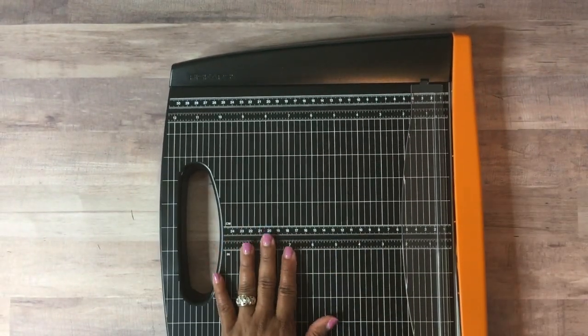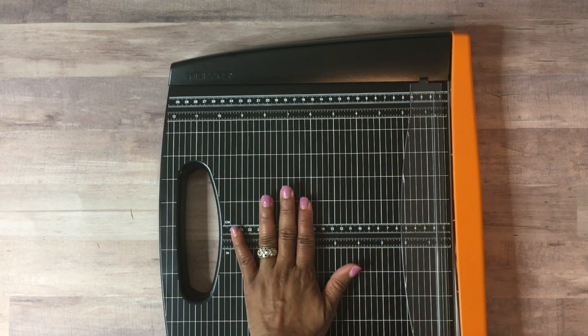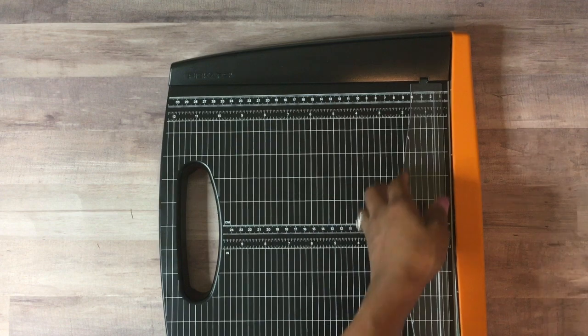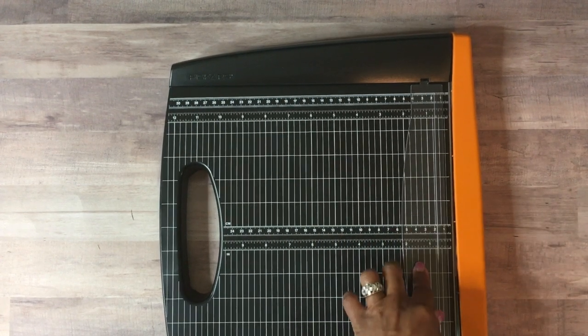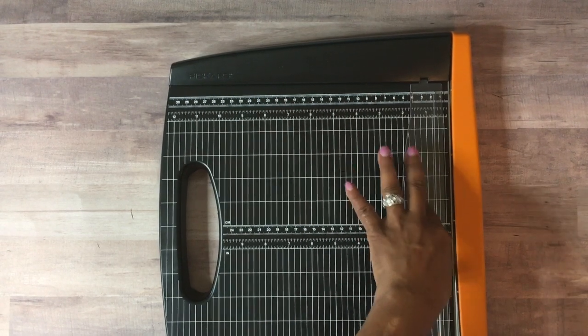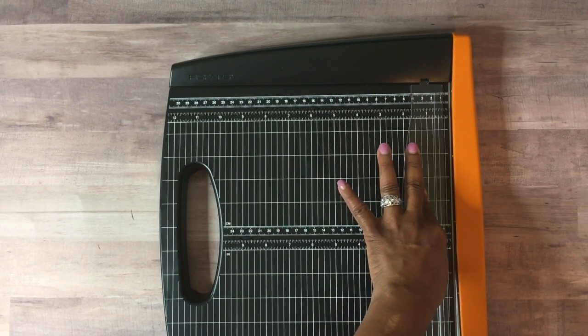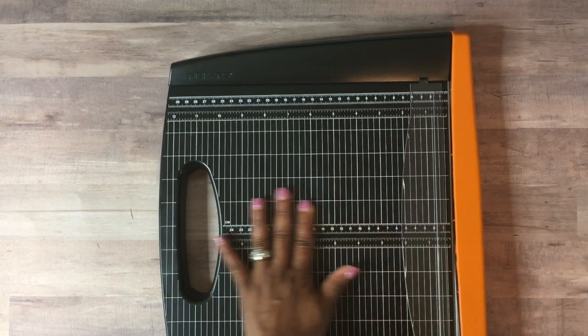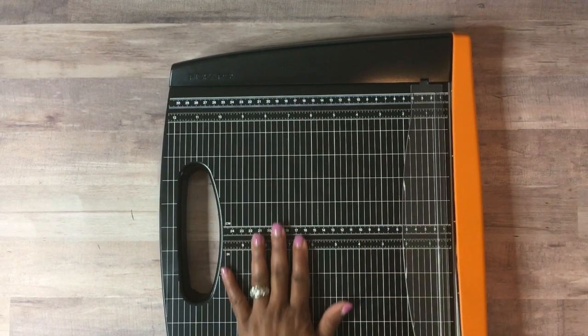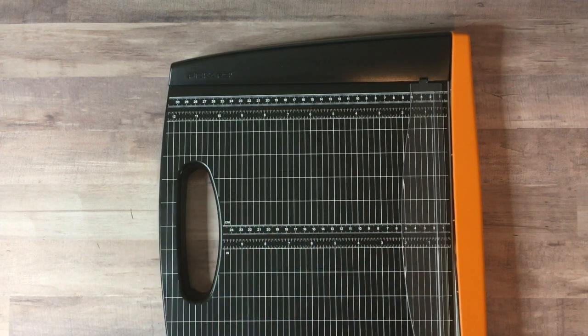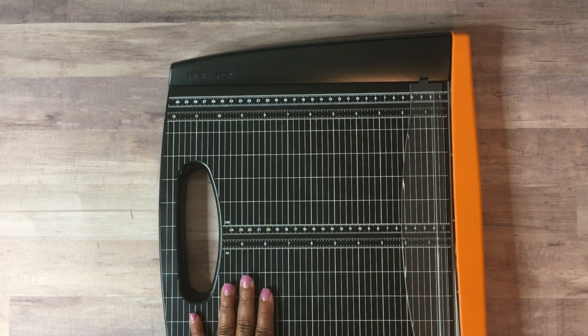They say this trimmer deck is recycled materials. I love the large deck. This area is a clear clamp that helps to keep your paper nice aligned so you get even cuts. You want to hold this down when you're cutting your paper. It's a smudge guard. They talk about the precision grid and scale, the carrying handle, the safety lock, and the rubberized feet.